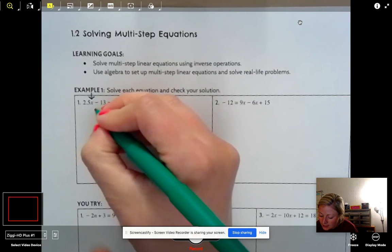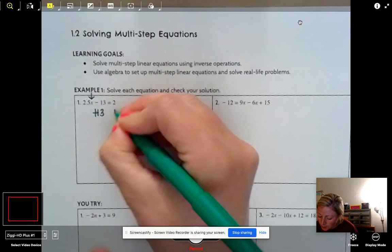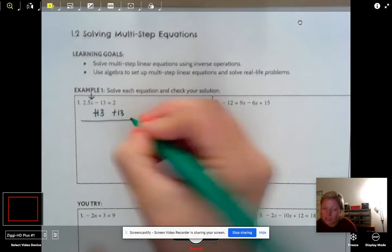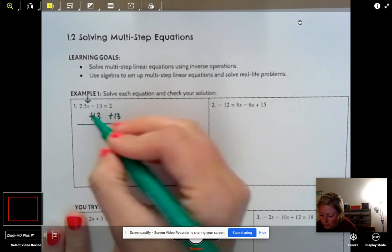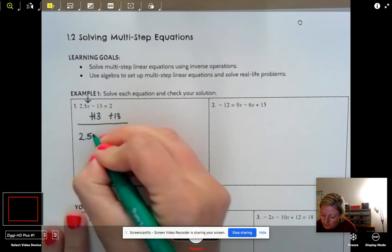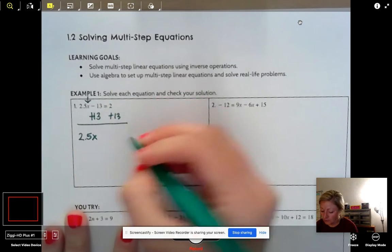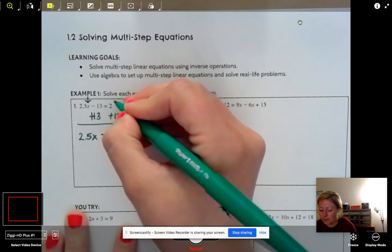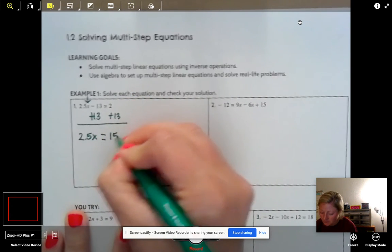You always move what's not with the x. So I have to get rid of this minus 13 first. So we are going to do the opposite of subtracting 13 and we are going to add 13 to both sides. Because remember, it is an equation. It needs to stay balanced on both sides. So nothing's happening to our 2.5x. We're just going to drop her down. Negative 13 plus 13, those cancel. So they go away. And now we have to take 2 plus 13 and we get 15.